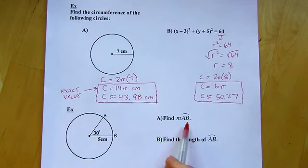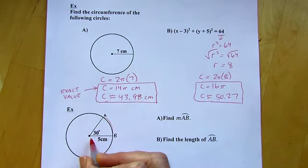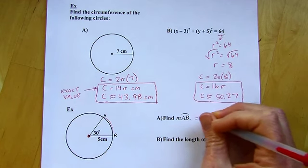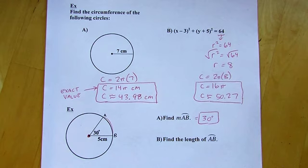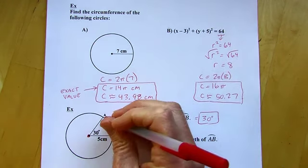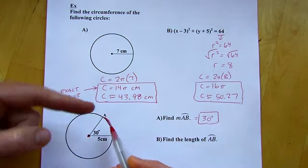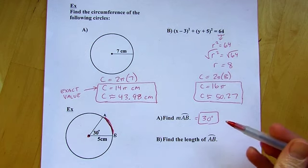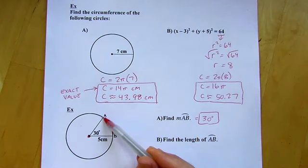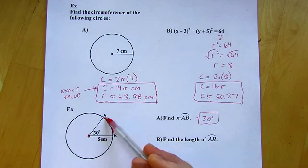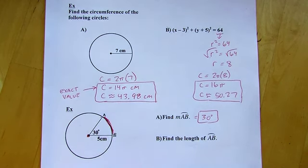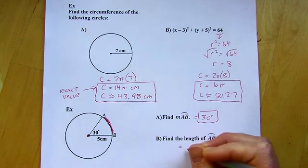Next, we're going to find the measure of arc AB. This is a central angle, because that point is marked as the center of the circle. The measure of an arc equals the measure of the central angle that intercepts it, so the measure of arc AB is just 30 degrees. But that's different from the length of AB — the measure refers to the angle, while the length is the actual distance along that piece of the circle, like the circumference of just that slice of pie.